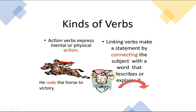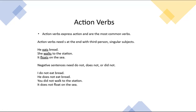A linking verb makes a statement by connecting the subject with a word that describes or explains it. For example, 'he rode the horse to victory' — 'rode' is the verb and 'he' is the subject. Action verbs are the most common verbs and need S at the end with a third-person singular subject — he, she, it. For example: 'he eats bread,' 'she walks to the station,' 'it floats on the sea.'